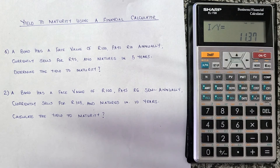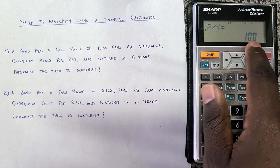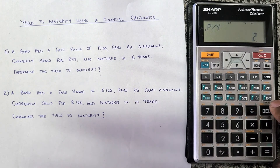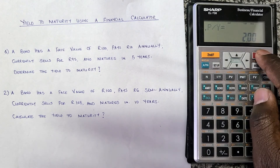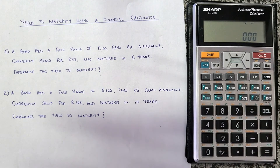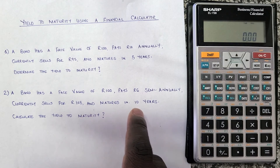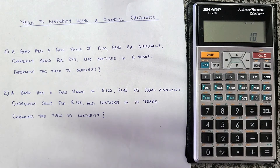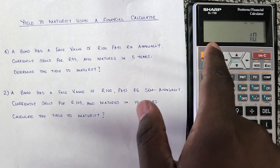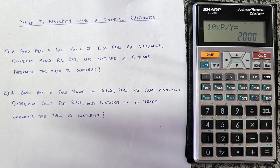Since the coupon is paid twice per year, we need to make sure the payments per year on our calculator is also set to two. Press Second Function and then I/Y — you can see it's still one per year. So press 2 and then press ENT, which means Enter. Now it's twice per year. Press ON/C to clear the screen.